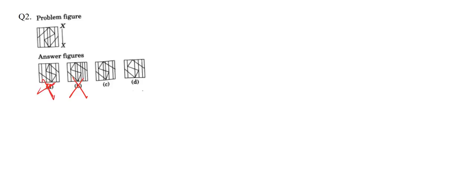So A and B are cancelled out; we are left with C and D. In C, we have a thin line in between the two thick lines. But in D, there is no thin line between those two thick lines. In the original figure, we have one thick line, another thick line, and a thin line in between them. In option D, we have one thin line and one thick line but no thin line in between. So option D is wrong. Hence, option C is the correct answer to this question.